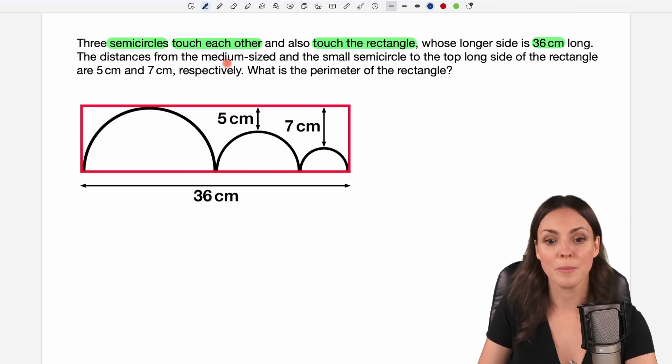The distances from the medium-sized and the small semicircle to the top long side of the rectangle are 5 centimeters and 7 centimeters respectively. So here they talk about these distances here that are given by 5 centimeters and 7 centimeters. What is the perimeter of the rectangle?